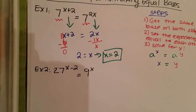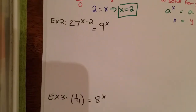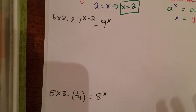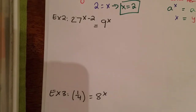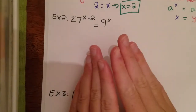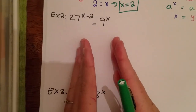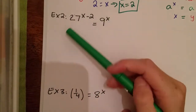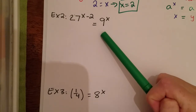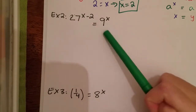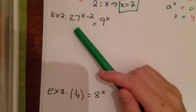And that's it for the first one. Now the next two example problems are like what we did at the end of the last section. Our goal is still to get the same base on both sides, but this time it's a little harder. We want to think of a number that goes into each of our bases and can be raised to an exponent to give us each of those bases.